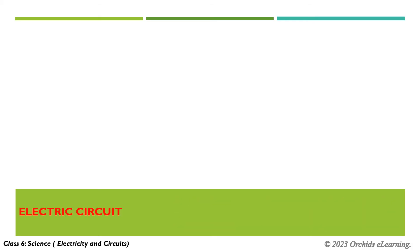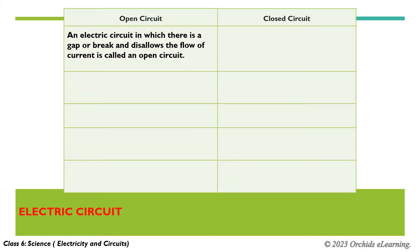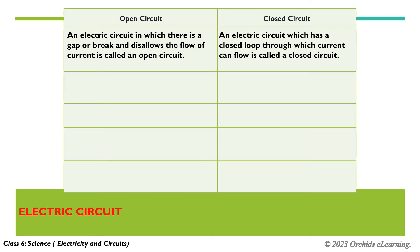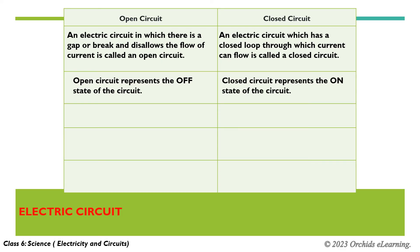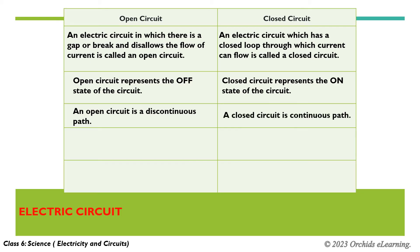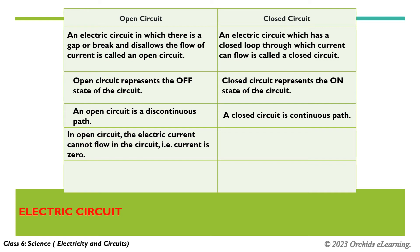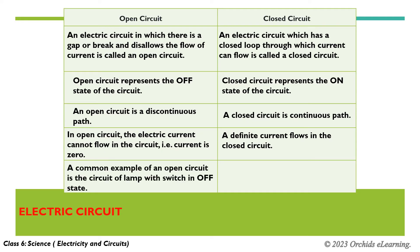Difference between closed and open circuit. An electric circuit in which there is a gap or break that disallows the flow of current is called an open circuit. An electric circuit that has a closed loop through which current can flow is called a closed circuit. Open circuit represents the off state; closed circuit represents the on state. An open circuit is a discontinuous path; a closed circuit is a continuous path. In an open circuit, electric current cannot flow — that is, current is zero. A definite current flows in a closed circuit. A common example of an open circuit is the circuit of a lamp with a switch in the off state.